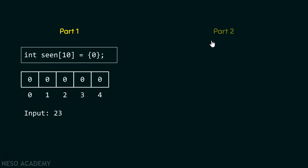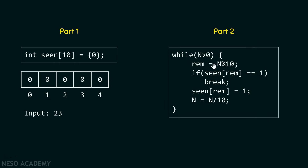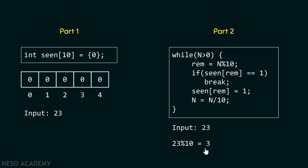Now let's understand part two, which is the main logic of this program. The variable n holds the value entered by the user. Suppose the user inputs 23, so n contains 23. Since 23 is greater than zero, the while loop condition is satisfied and we enter the loop. We divide 23 by 10 and store the remainder in the rem variable, which gives us the last digit of the number. We then check: is seen[rem] equal to 1?